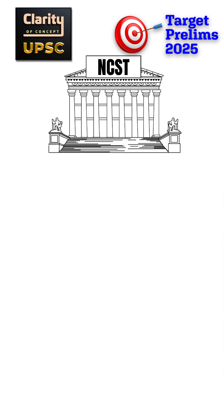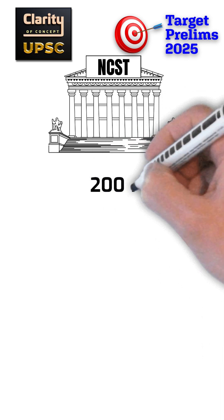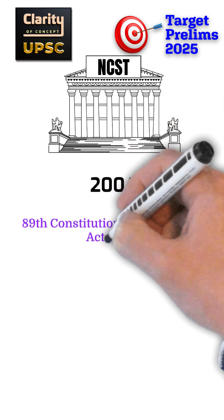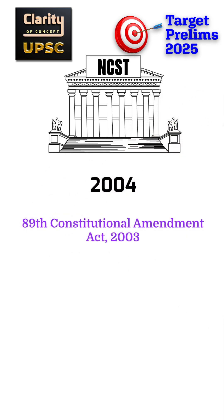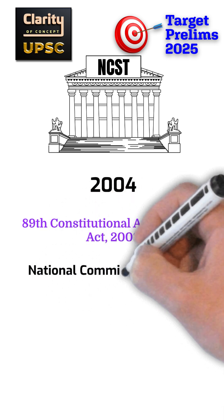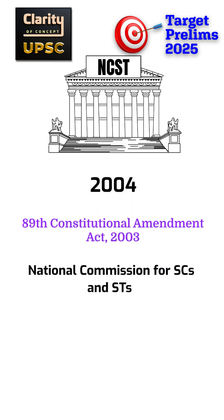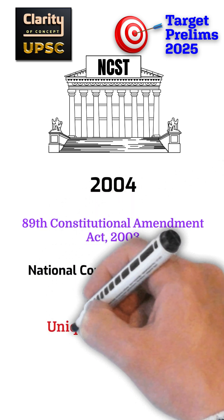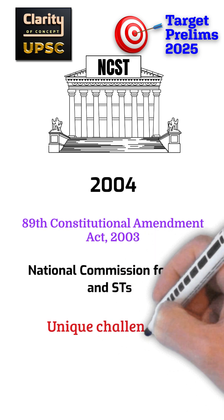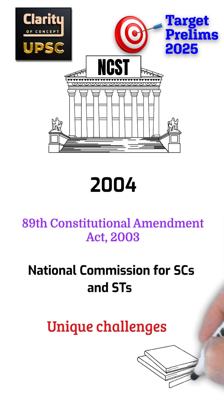The National Commission for Scheduled Tribes was established in 2004 after the 89th Constitutional Amendment Act 2003. Before this, the combined National Commission for SCs and STs handled tribal issues. But since scheduled tribes face unique challenges, a separate commission was created to address them effectively.